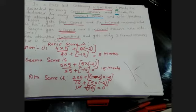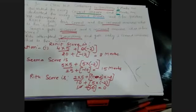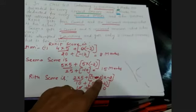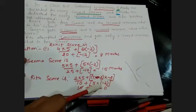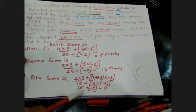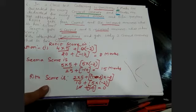I am repeating again: 2 correct questions — 2 into 5 equals 10. Total attempted is 7, minus 2 correct equals 5 incorrect questions. For incorrect questions the deduction is minus 2 marks each, so 5 into minus 2 equals minus 10. Then 10 plus minus 10: plus 10 and minus 10 cancel out. It is equal to 0. Ritu's score is 0.